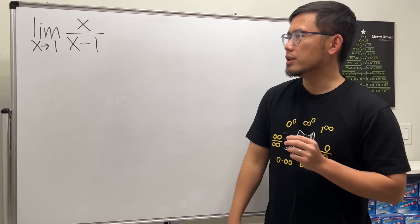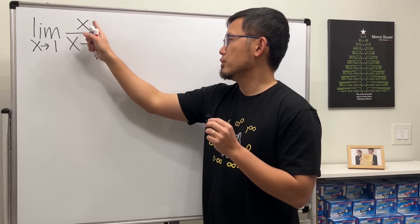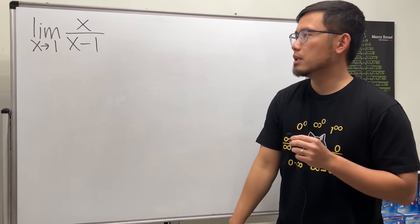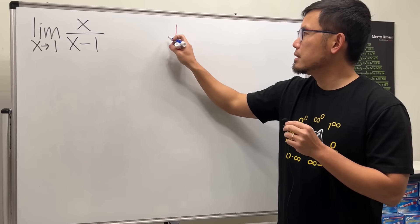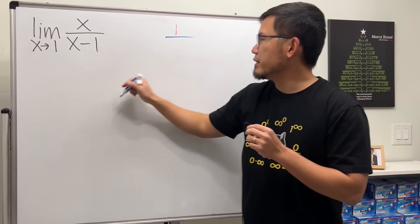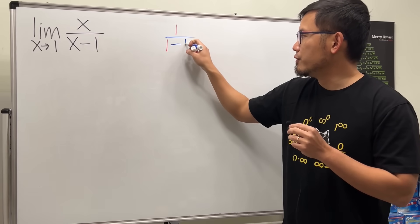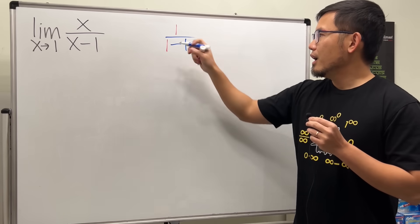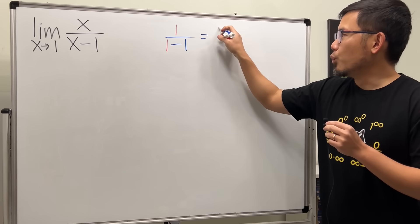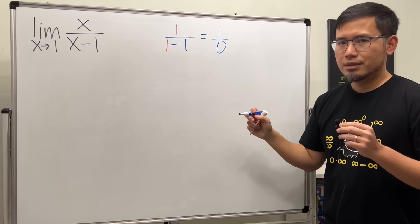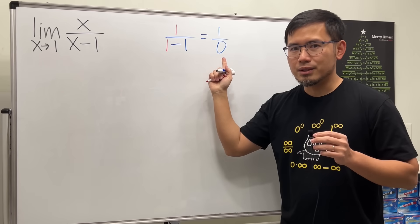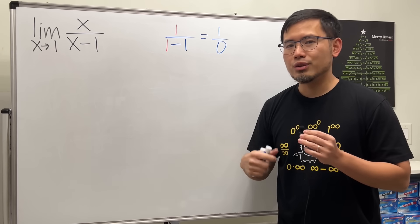We are going to calculate the limit as x approaching 1 of x over x minus 1. Whenever we are doing this kind of questions, we should always plug in this number into all the x's and see what happens. So when we do that, put 1 in here, we have 1 on the top, over, put 1 right here, we have 1, and then minus the 1 from the original question. This is 1 over 1 minus 1, which is 0. The answer is not undefined. You cannot say that right away. You have to observe more.